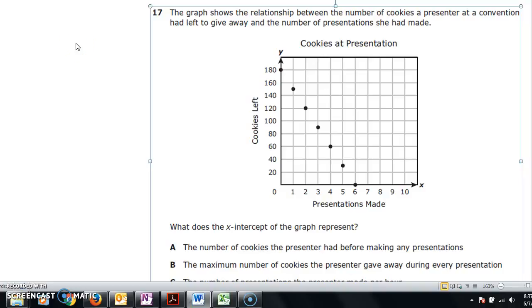Number 17. The graph shows the relationship between the number of cookies a presenter at a convention had left to give away and the number of presentations she had made.